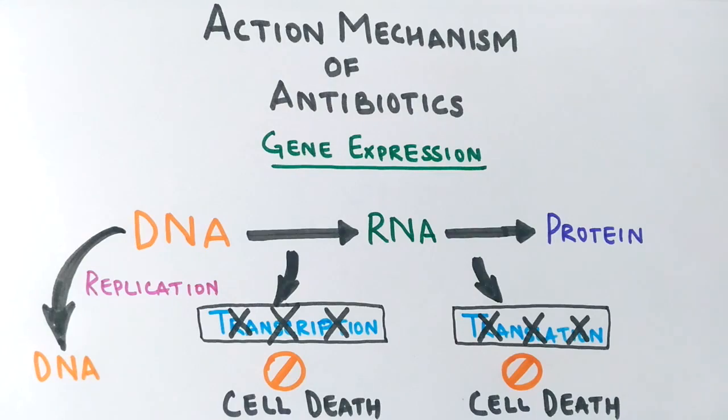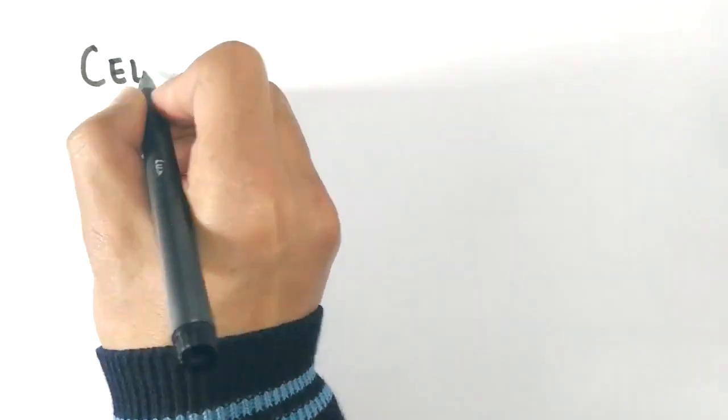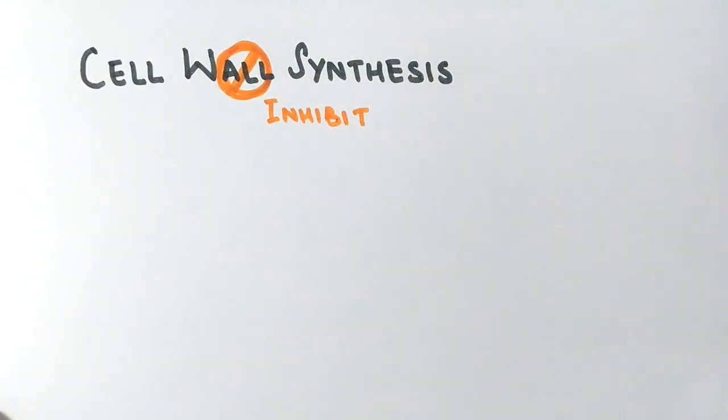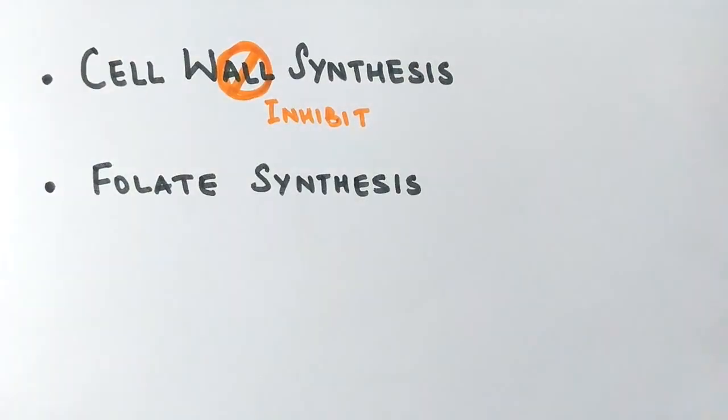Another novel way antibiotics work is by inhibiting cell wall synthesis of bacteria. We humans do not have cell walls like bacteria have, so the cell wall becomes an easy target of antibiotics. Finally, some antibiotics like sulfa antibiotics inhibit folate synthesis in bacteria by competitive inhibition of enzymes.